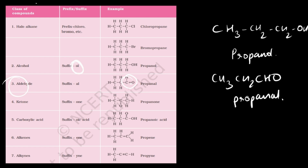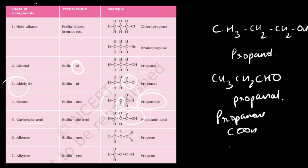For ketones: use the suffix '-one'. The minimum chain length for a ketone is three carbon atoms because the ketone group sits between two carbon atoms. A three-carbon ketone is propanone. For carboxylic acids: towards the end we find -COOH, and the name ends in '-oic acid'. A three-carbon carboxylic acid is propanoic acid.